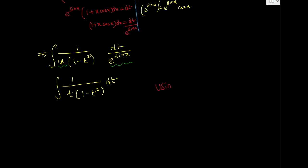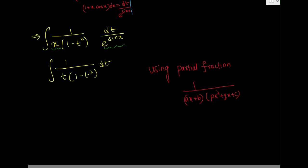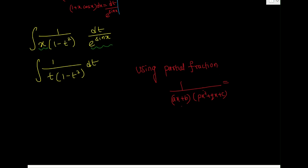To solve this, we need to use partial fractions. Whenever you have a product of linear terms in the denominator that you cannot integrate directly, you rewrite the product as a sum of simpler fractions. For a linear term ax + b, you get constant A in the numerator; for a quadratic term, you get a linear expression bx + c.